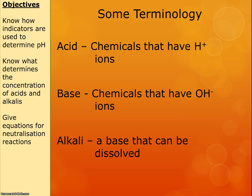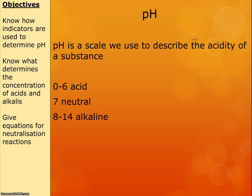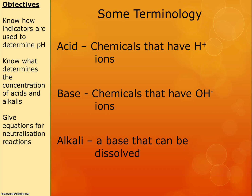I just want to make sure we've got some terminology straight. When we talk about acids, we're talking about chemicals that have H+ ions — a hydrogen atom that's lost an electron, which means it's got a positive charge. Bases are chemicals that have OH- ions, that's an OH joined together with an extra electron. An alkali is a base that can be dissolved, so any base I can get as a liquid. Bases and alkalis are very similar; they've both got this extra OH- ion.